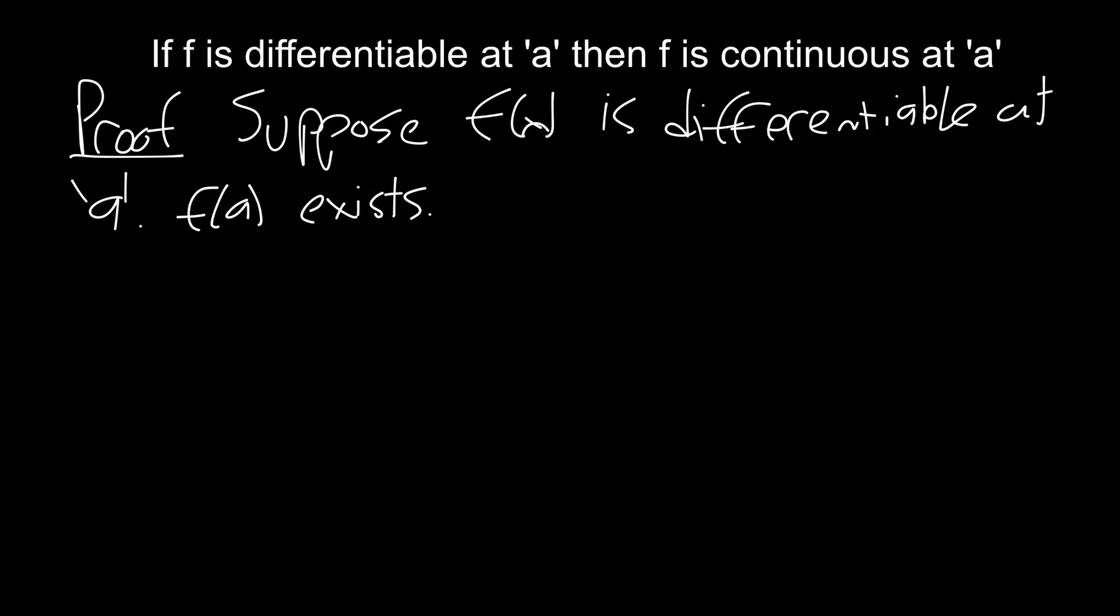Since f of x is differentiable at a, we can write out the following limit. The limit as x goes to a of f of x minus f of a all over x minus a exists. So we know that this limit here exists and will give us a number.